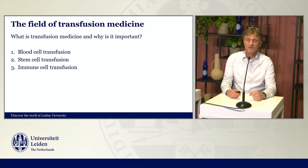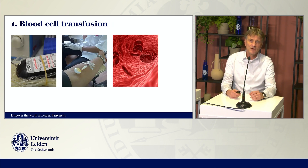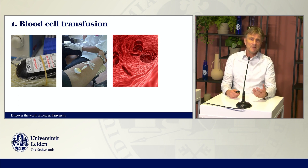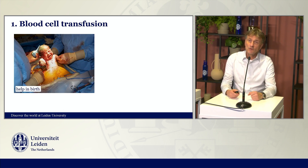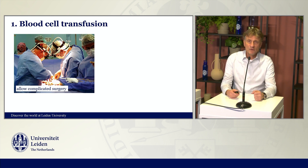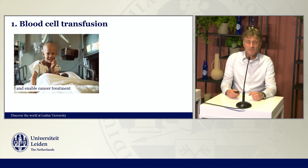What is transfusion medicine, and why is it important? We can divide it up in three different areas. The first is classical blood cell transfusions. If you're a blood donor, or you've experienced a family member getting a red blood cell transfusion, you know what this is about. Blood cell transfusions are really important — they prevent death after trauma, they help in complicated obstetrics where a mother loses a lot of blood, and they allow us to do complicated surgery like cardiac surgery.